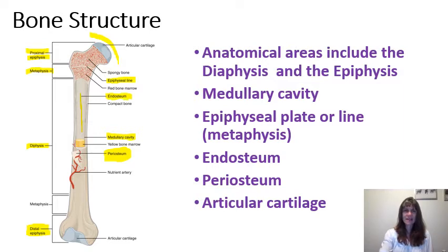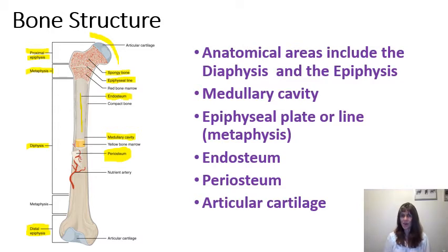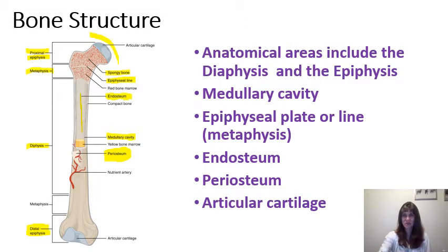Bone comes in two forms: spongy bone, also known as cancellous bone, and compact bone, also referred to as cortical bone. There is spongy bone on the end of the bone. Lying on the trabeculae of the spongy bone, we will also see the lining of the endosteum.